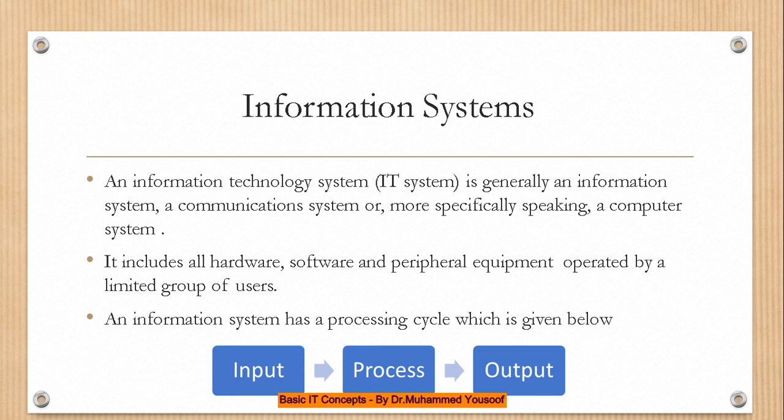An information system has a basic processing cycle with three steps. The user gives an input, the input is processed, and then an output — which is information — is produced. For example, you enter your university ID, you click 'check', the system searches (which is the process), and then the output is your transcript. Input leads to process, which leads to output. This is the processing cycle of any information system.